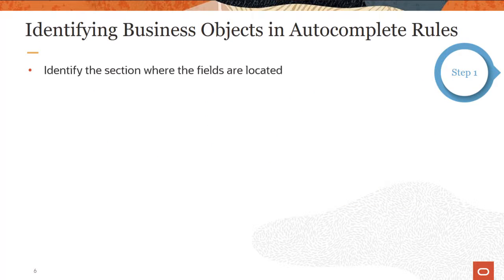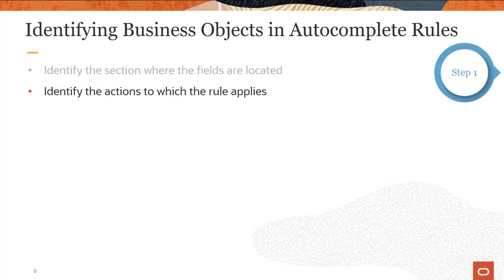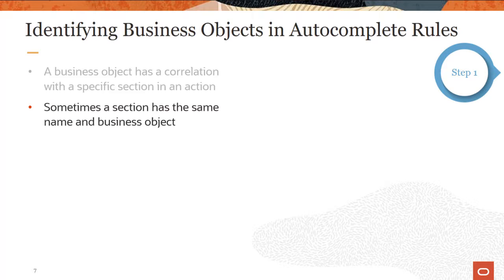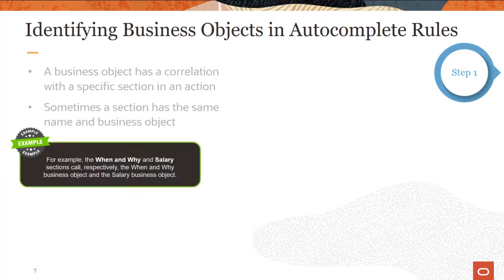The first step in designing an autocomplete rule is to identify the business object. This includes identifying the section that contains the fields you want to default or validate. For example, if you want to validate the date of a promotion or transfer, then you would look at the date field in the when and why section.